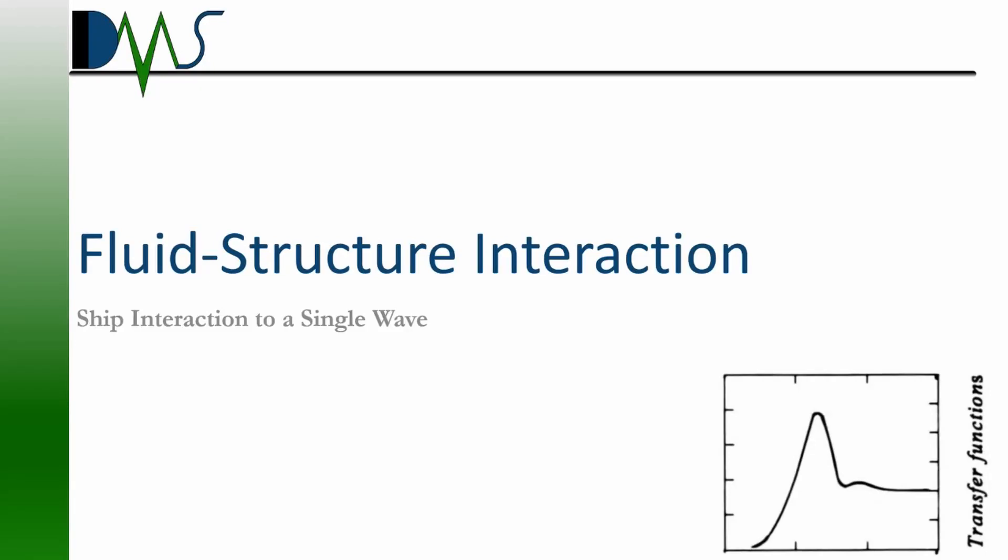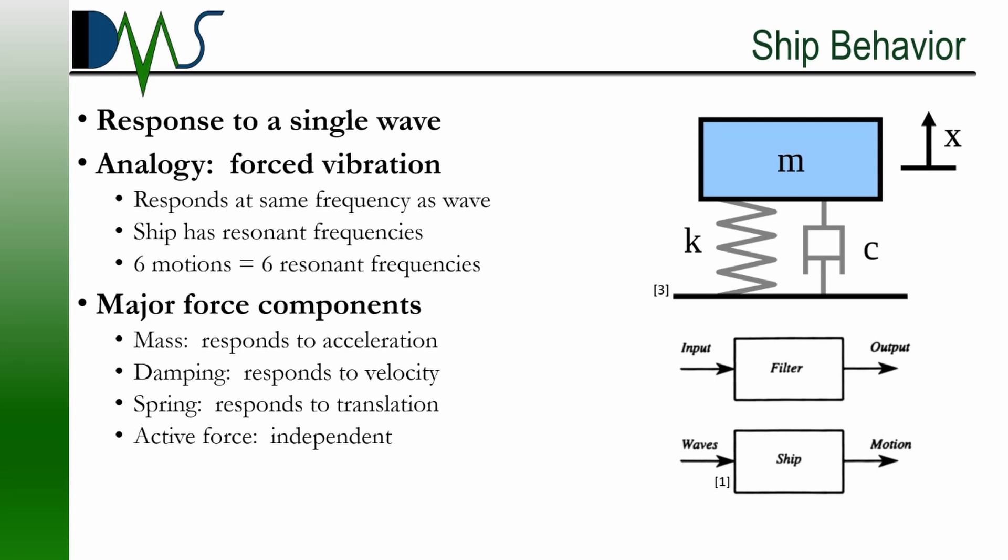So let's stop talking about the ocean climate. Now let's talk about the second half, fluid structure interaction. How do we actually predict the motions of the ship once we have that input wave spectrum? And generally the way this works is we say that if we can predict how the ship would respond to a single wave, then we can repeat that and predict its response for all of the waves in the wave spectrum.